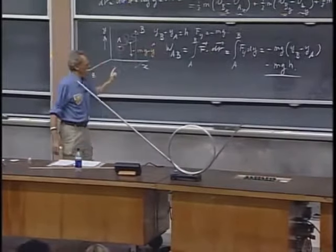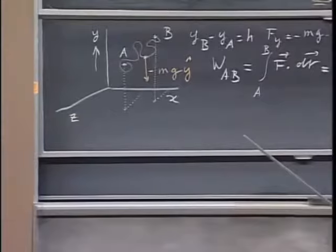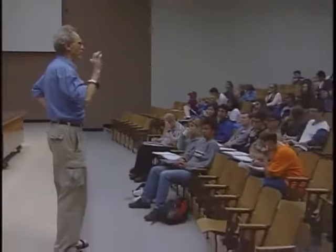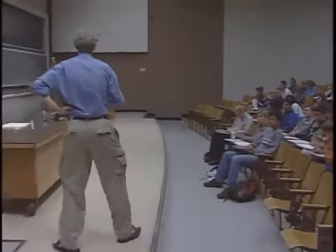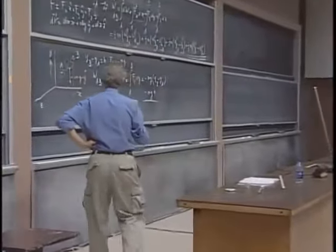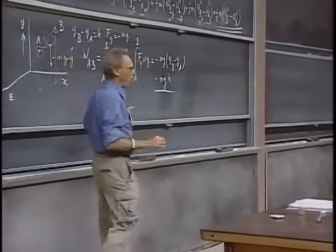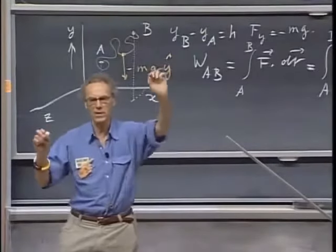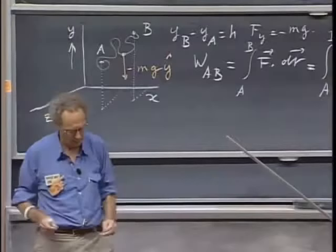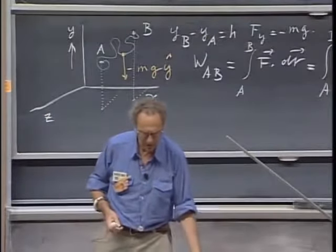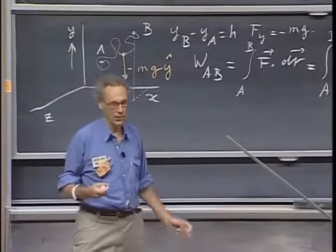Whenever the work that is done by a force is independent of its path, is only determined by the starting point and the end point, that force is called a conservative force. It's a very important concept in physics. Whenever the work that is done by a force in going from one point to another is independent of the path, it's only determined by the starting point and the end point, we call that a conservative force. Gravity is a conservative force.